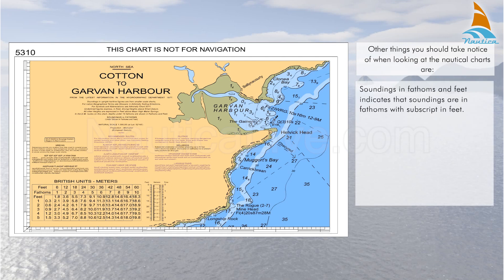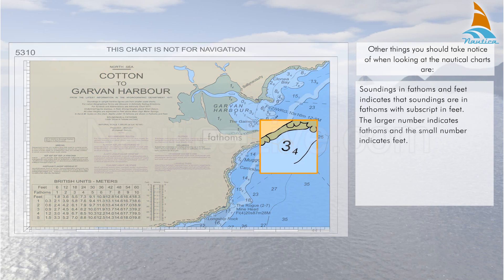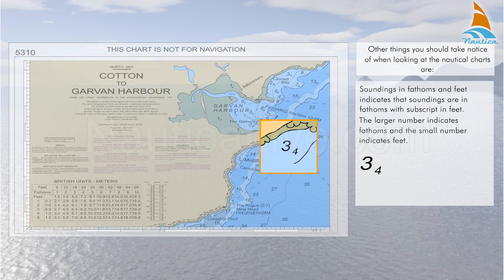Soundings in fathoms and feet indicates that soundings are in fathoms with a subscript in feet. The larger number indicates fathoms and the small number indicates feet. For example, if you see a spot depth of a large three followed by a small four, this indicates a depth of three fathoms and four feet, or 22 feet, as one fathom is six feet.